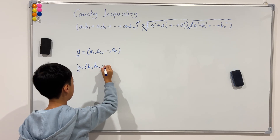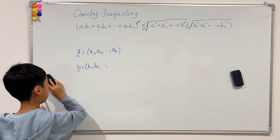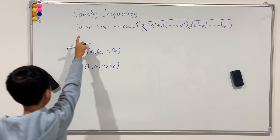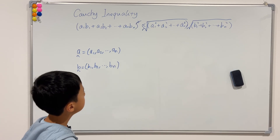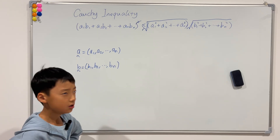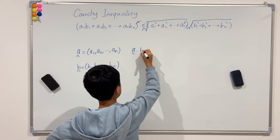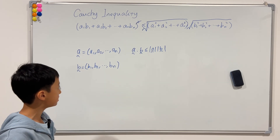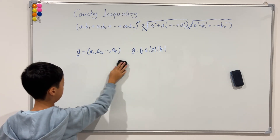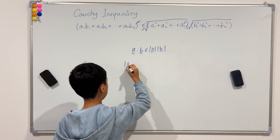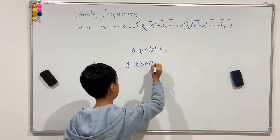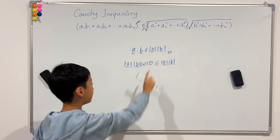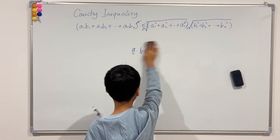You can verify that a·b equals the left-hand side, and the right-hand side looks like magnitudes — it's |a| times |b|. So what we're trying to prove is that a·b ≤ |a|·|b|. You basically don't even need to prove this formally, because a·b = |a||b|cosθ, and since cosθ ≤ 1, we immediately get a·b ≤ |a||b|. That's just common sense — so Method 2 is super easy.